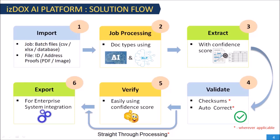For the data extracted with a low confidence score, at step number 5, for the first time, human-in-the-loop comes into the picture. EasyDocs UI makes the verification easy due to color coding based on confidence score. The final data along with the verification status is then exported to the core business system for further processing.